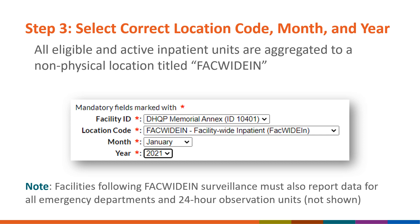NHSN uses a single facility-wide inpatient denominator which covers every active inpatient location within the facility. In order to make the reporting process more efficient, all eligible and active inpatient units should be aggregated to a non-physical location titled FACWIDEIN. This location code is automatically available from the drop-down menu on the denominator form.